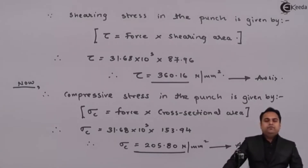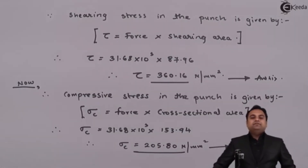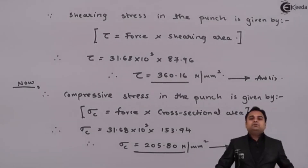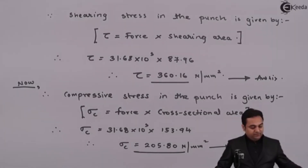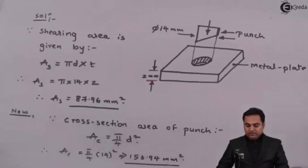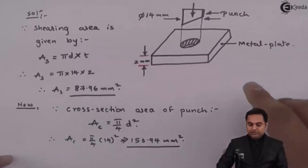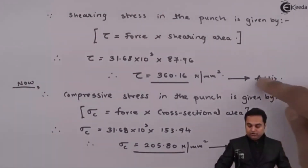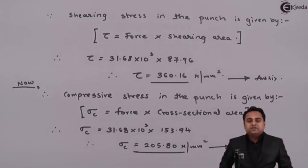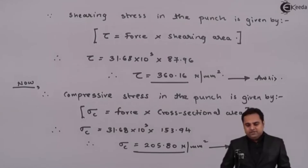In this problem we were asked to calculate two things: first, the shear stress induced in the punch, and second, the compressive stress. We understood the meaning using a diagram and calculated the values of shear stress and compressive stress induced in the punch when a hole is punched in a metal plate. With this we complete the problem.